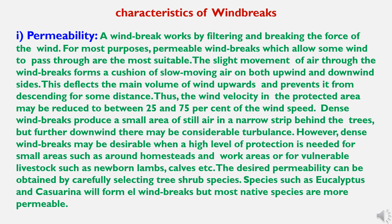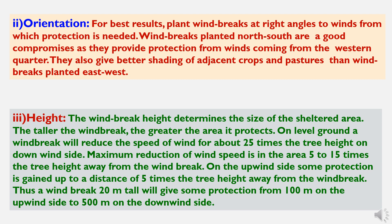Species such as eucalyptus and casuarina will form less permeable windbreaks, but most native species are more permeable. The second characteristic is orientation. For best results, plant windbreaks at right angles to winds from which protection is needed. Windbreaks planted north-south are a good compromise as they provide protection from winds coming from the western quarter and also give better shading of adjacent crops and pastures than windbreaks planted east-west.